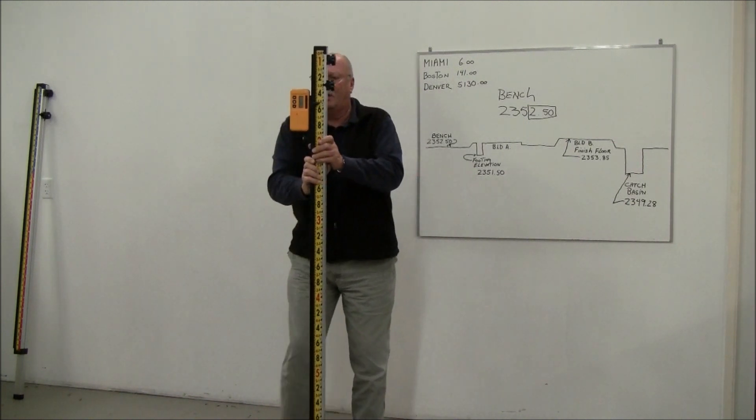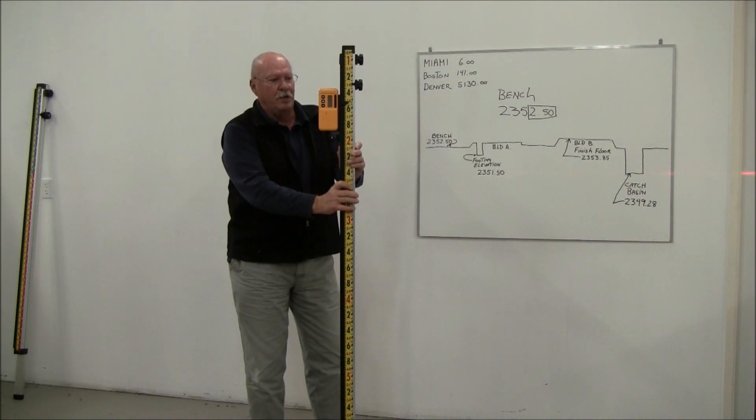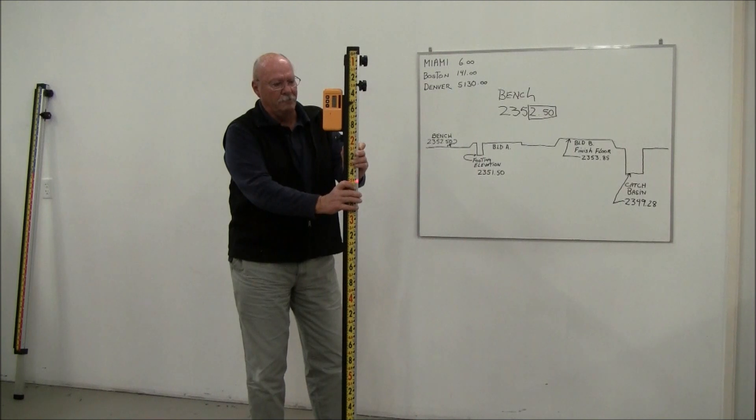So that is a direct reading slash true elevation linker rod, and that's how you use it. Thank you.